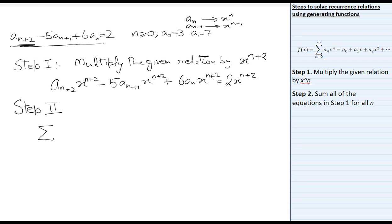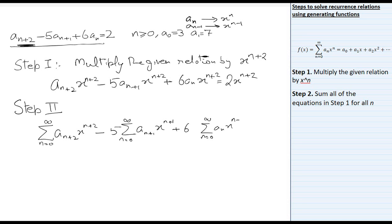So we have: Σ(n=0 to ∞) aₙ₊₂ · x^(n+2) − 5 · Σ(n=0 to ∞) aₙ₊₁ · x^(n+1) + 6 · Σ(n=0 to ∞) aₙ · x^(n+2). You can see that the subscript and the power of x match in some cases but not in others — here it is n, here n, and here n+2.